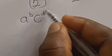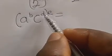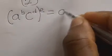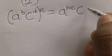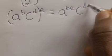Extending this: if I have a raised to power b, multiplied by c raised to power d, and everything is put in brackets raised to power e, then this e multiplies both inner powers. The result becomes a raised to power be, times c raised to power de.